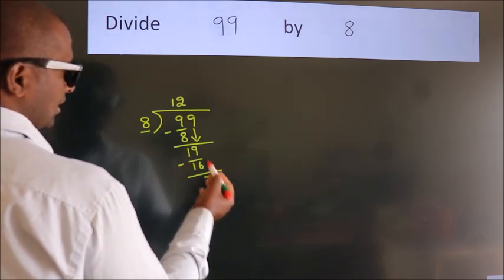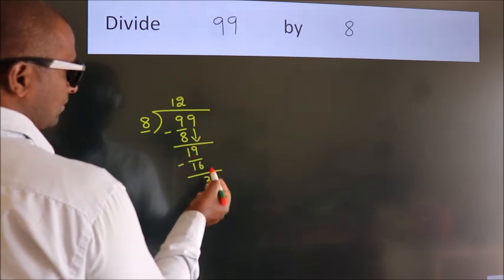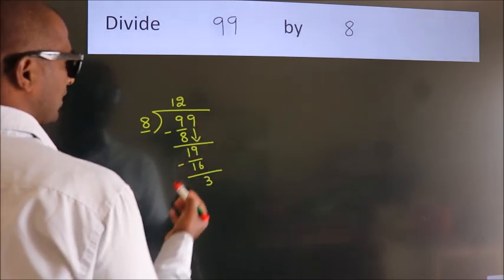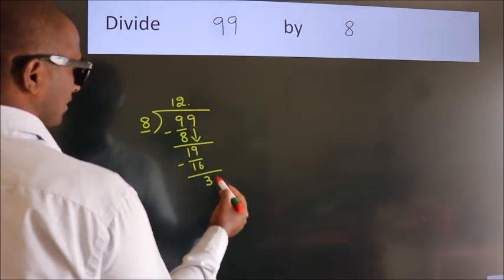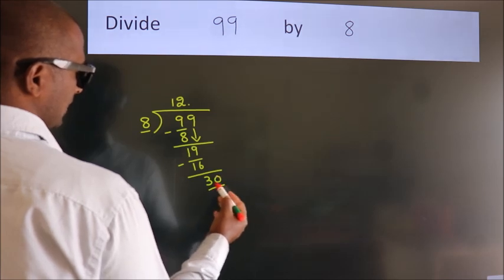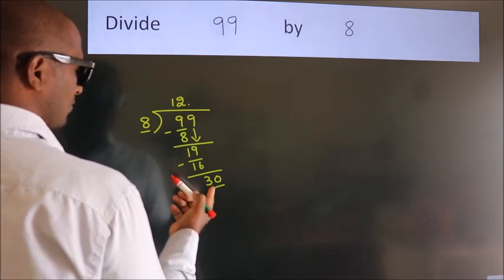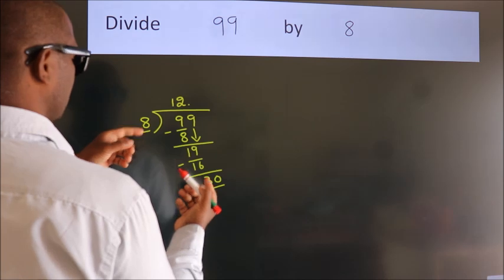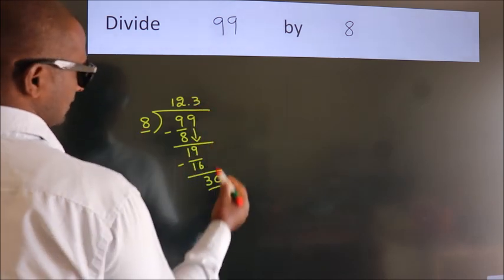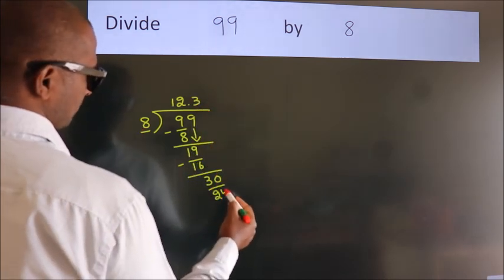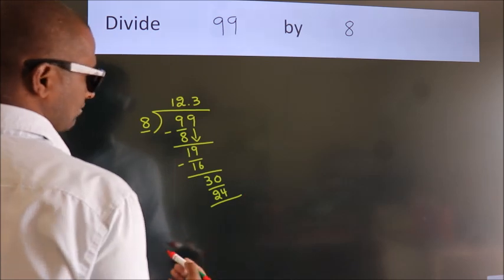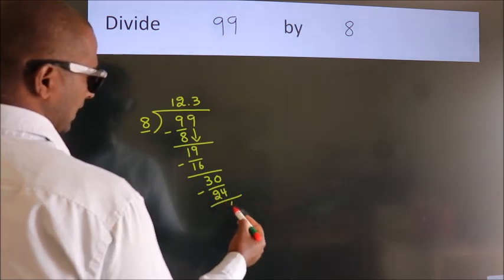After this, no more numbers to bring it down. So, what we do is we put dot, take 0. So, 30. A number close to 30 in 8 table is 8 threes, 24. Now, we subtract. We get 6.